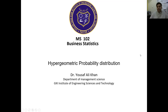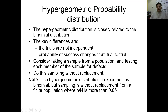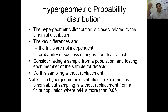In hypergeometric distribution, which is similar to binomial, the key differences are: the trials are not independent — the trials will be dependent on one another. The first probability depends on the second, and the third depends on the first and second. Probability of success changes from trial to trial. This is a very simple difference between binomial and hypergeometric distribution.